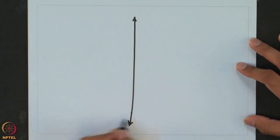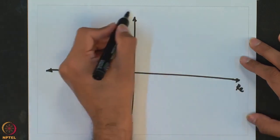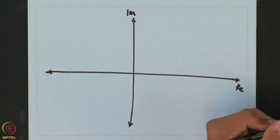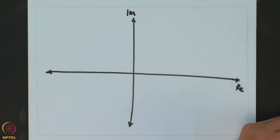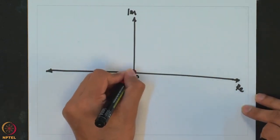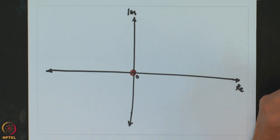This is the real axis and this is the imaginary axis. In this figure, for any transfer function, we will plot the poles as well as zeros. Starting with poles: if the pole of the system falls at the origin, then the denominator of the transfer function will have a term S, meaning the transfer function includes a 1 over S term.